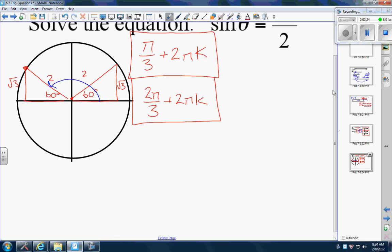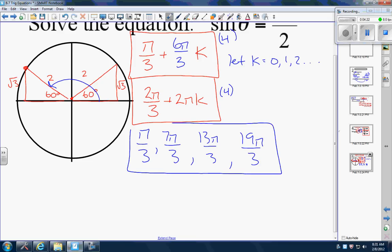Now if I ask for the first eight solutions, we're going to start kicking in the k. If I get four out of here and four out of there, there's my eight solutions. Let k equal zero, one, two, and so on. My first solution is pi over 3. Now I'm going to do all four for this top one first - maybe you want to rewrite this as 6 pi over 3 because that's the same as 2 pi. Pi over 3 plus 6 pi over 3 - my next solution is 7 pi over 3, then 13 pi over 3, then 19 pi over 3.